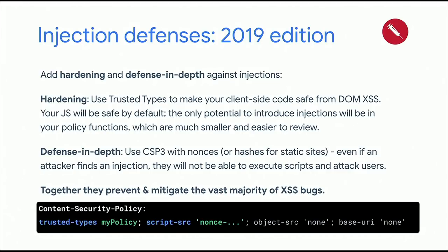Wrapping up the injection defense section: you now know how to defend against stored and reflected XSS with a nonce-based CSP, and how to defend against DOM-based XSS with a trusted types policy. The nice thing is these two technologies fit very well together — they can even be set through a single content security policy. Together, they really prevent and mitigate the vast majority of XSS vulnerabilities in your application. And with that, I hand back to Artro, who will tell you more about upcoming new isolation features in the web platform.